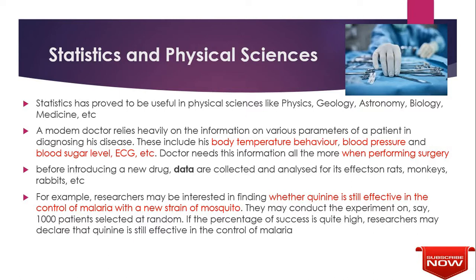In physical science, a doctor going to perform surgery needs some basic data — body temperature, blood pressure, blood sugar level, and ECG are all parameters a doctor needs. Another example: a company trying to introduce a drug to the market will analyze whether it is effective or not, conduct tests, and only if the data obtained is satisfactory will they launch it.